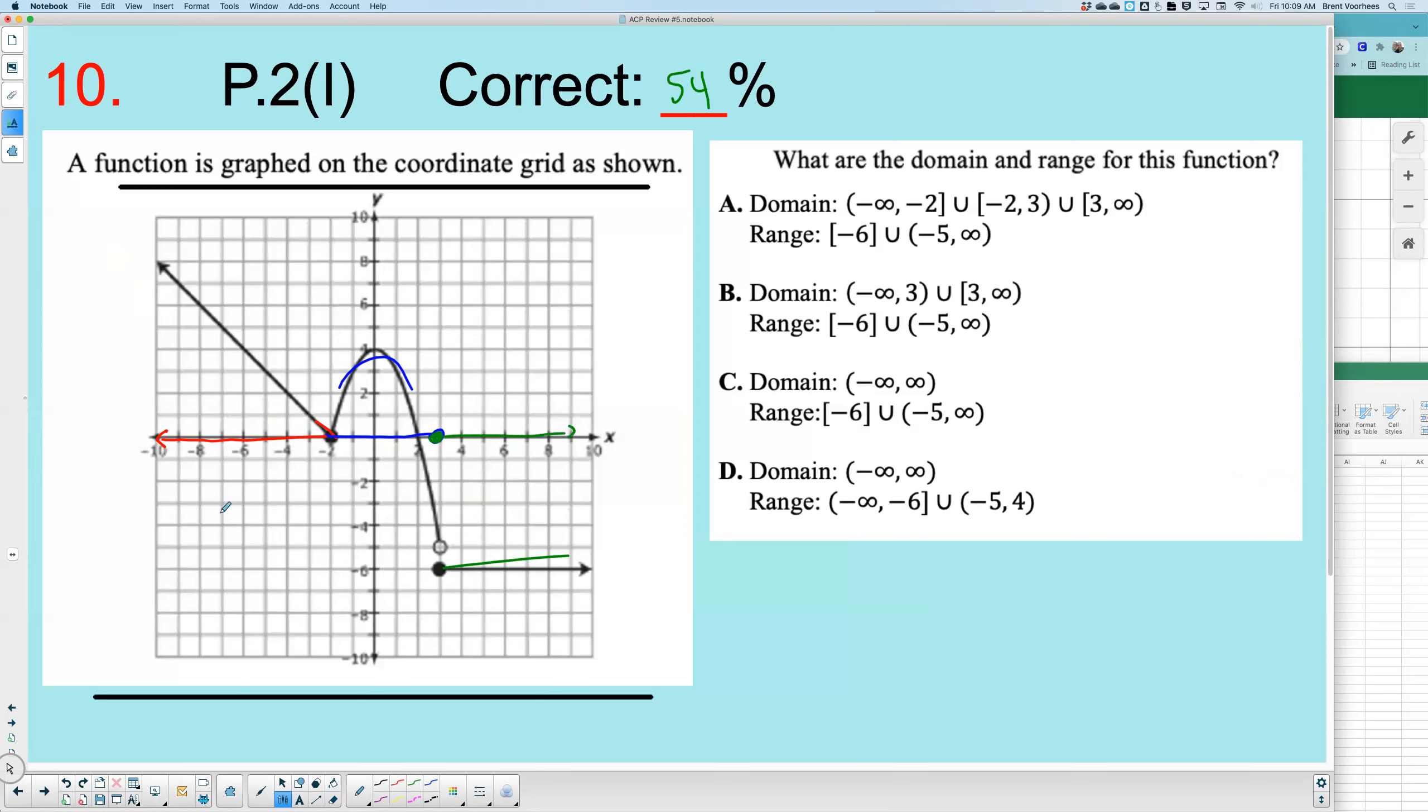And so there's no gaps. So that right there eliminates B and A, because that's saying there's two breaks. So those two are out. So it comes down to either C or D.